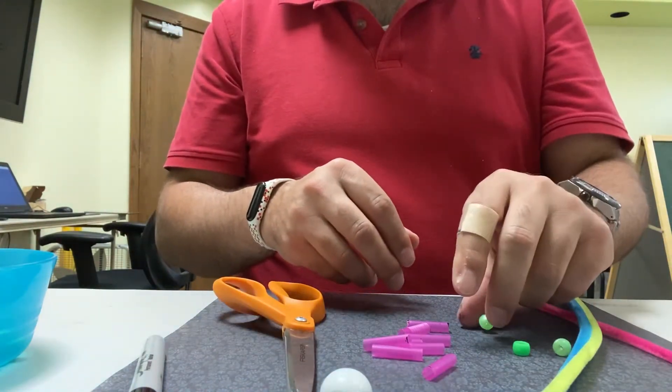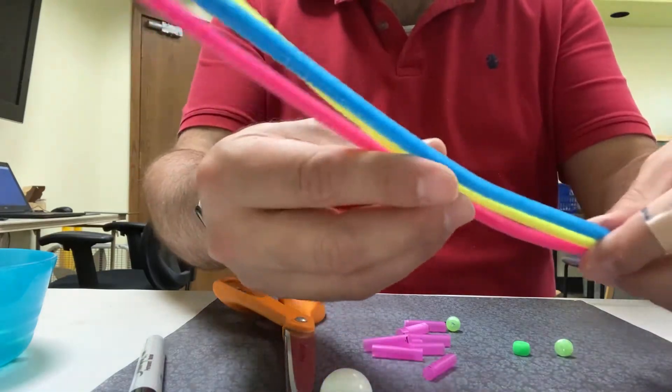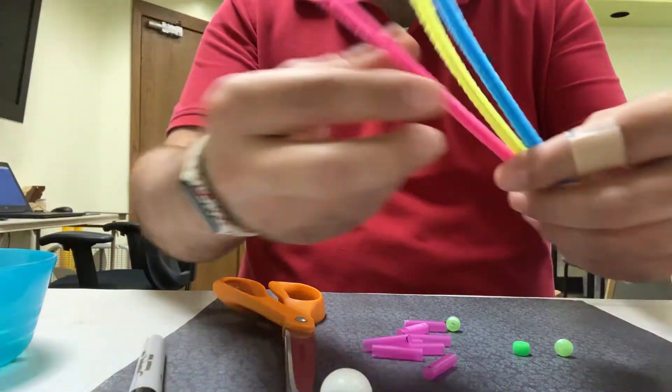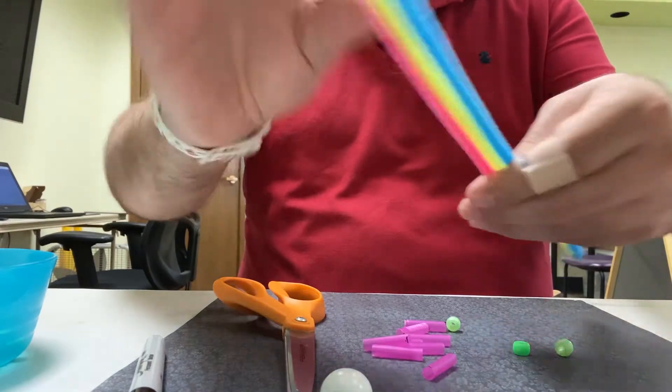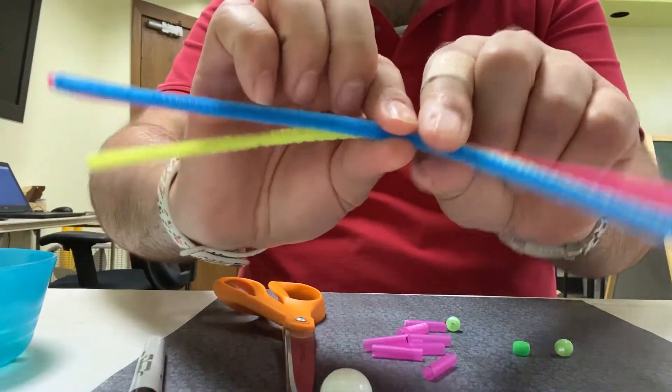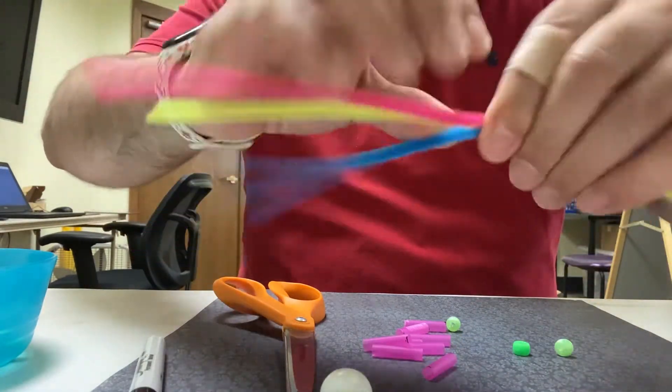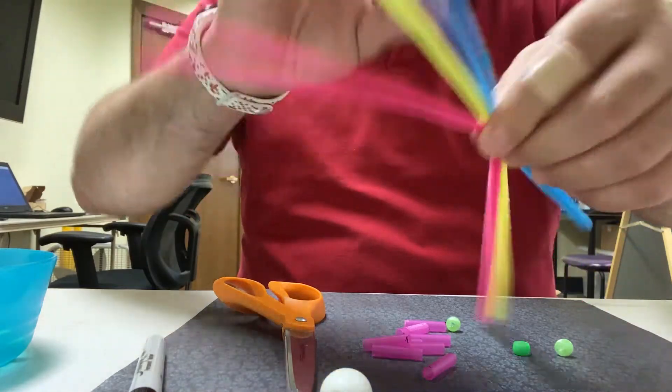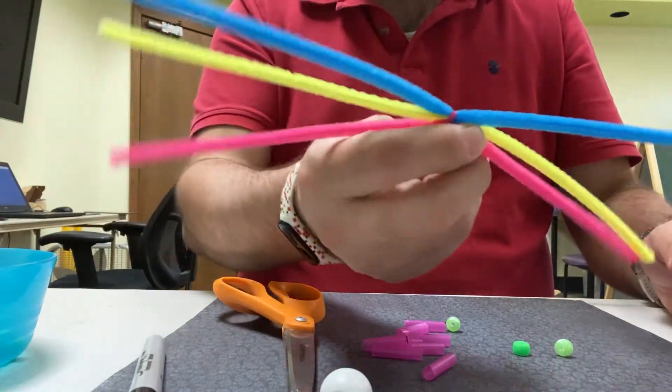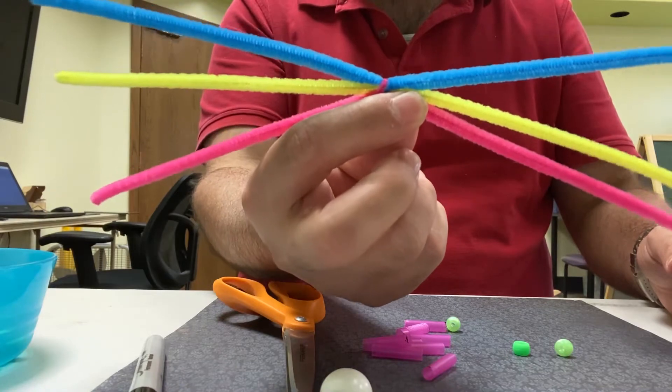Now to get started, we're going to take our three pipe cleaners and line them up together and do a twist in the middle. Two twists so they stay together. As you can see we now have all three twisted together.